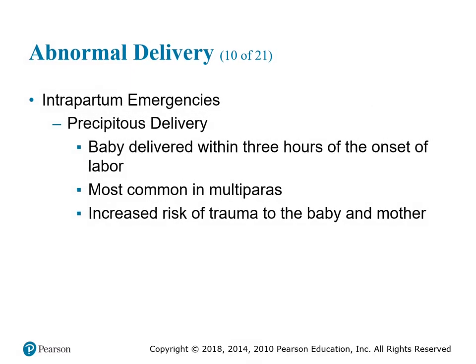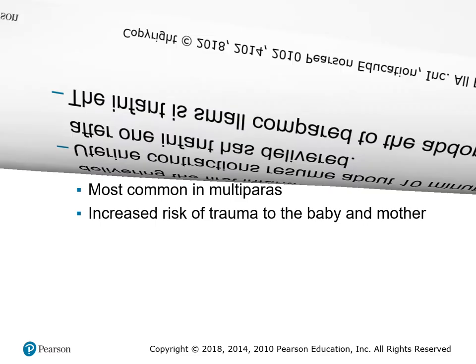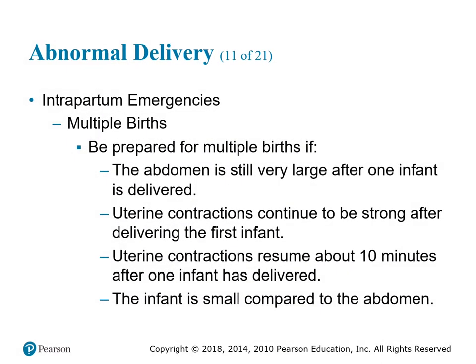Precipitous delivery is baby delivery within three hours of the onset of labor, most common in multiparas — ladies who have delivered many babies. There is increased risk of trauma to both baby and mother. Multiple births: be prepared for multiple births if the abdomen is still very large after one infant is delivered, if uterine contractions continue to be strong, if contractions resume about 10 minutes after delivery, or if the infant is small compared to the size of the abdomen.